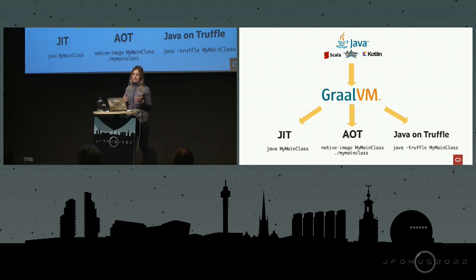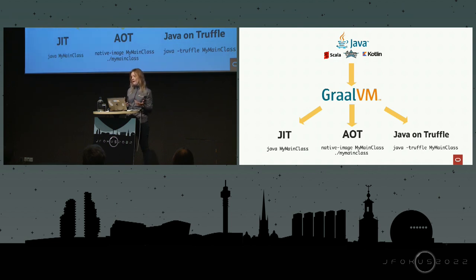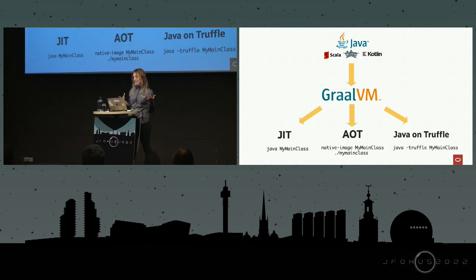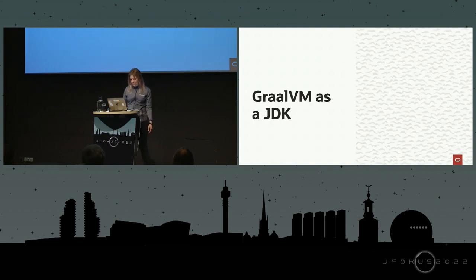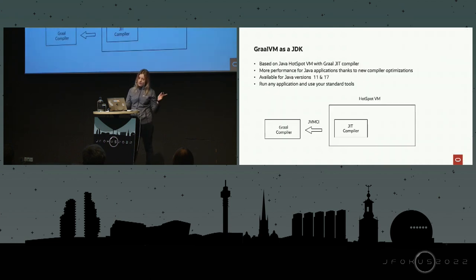GraalVM has its own language implementation framework called Truffle, which is basically how we implemented languages like JavaScript, Python, and Ruby on GraalVM. We also implemented a JVM bytecode interpreter on GraalVM using that same framework, so it can more easily interact with all those languages. So in fact there are three ways that you can run Java on GraalVM.